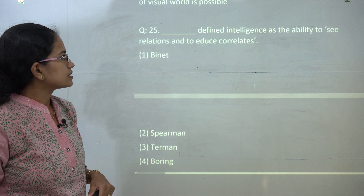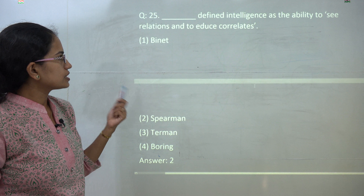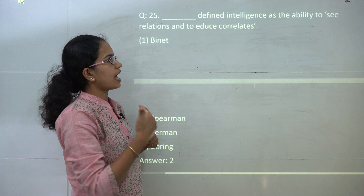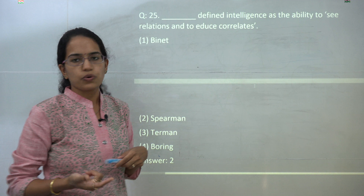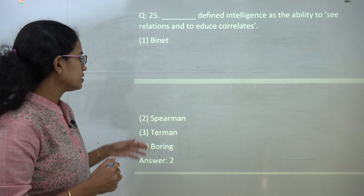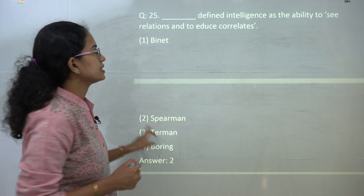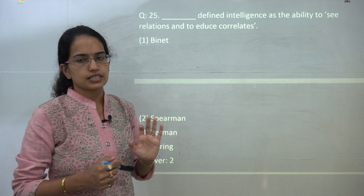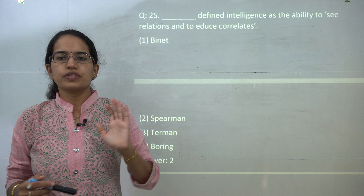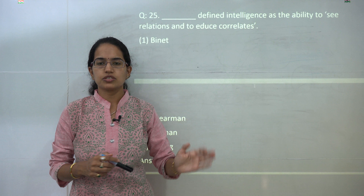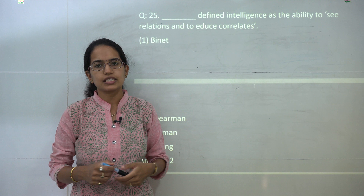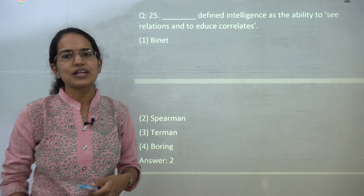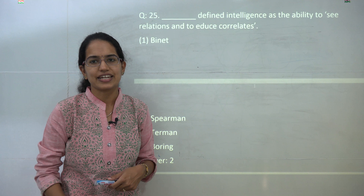The next question: the definition of eduction of relations and eduction of correlates was given by Spearman. So Spearman is the correct answer, and he explained intelligence in these terms. With this, we cover the first 25 questions. We will be covering the next set of 25 questions in the upcoming class. Stay tuned and have a very good day ahead.